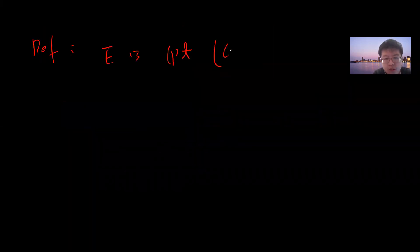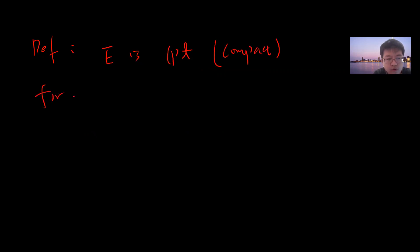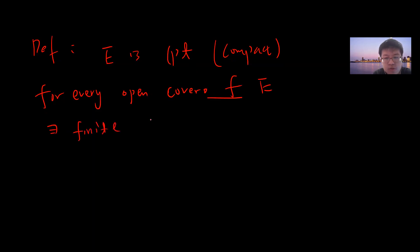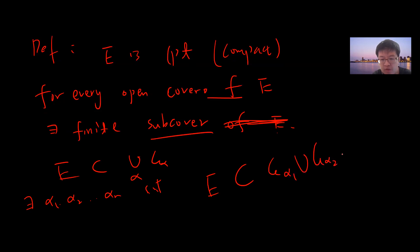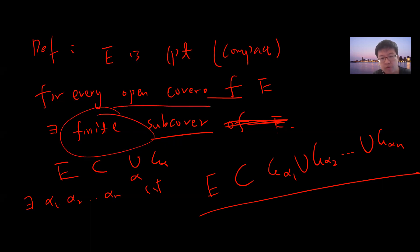Definition: E is compact if for every open cover of E, there is a finite subcover. What I'm saying is that you take any open cover of E, then you can find alpha_1, alpha_2, ..., alpha_n such that E is just G_alpha_1 union G_alpha_2 union ... union G_alpha_n. So any open cover must have a finite subcover. This is called compact.